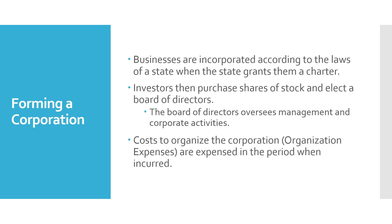When a business wants to form a corporation, they have to decide in what state they want to file their Articles of Incorporation. They will then be incorporated according to the laws of that state when the state grants them a charter. Investors are then going to purchase shares of stock and elect a board of directors. The board of directors oversees management and corporate activities. Any costs incurred in organizing the corporation are expensed in the period when incurred to an account called organization expense.